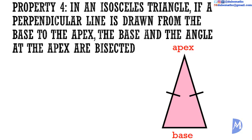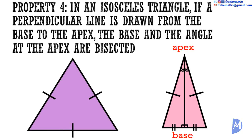Property 4: In an isosceles triangle, if a perpendicular line is drawn from the base to the apex, the base and the angle at the apex are bisected — that is, split into two equal parts. The two angles formed at the apex are equal, and the base now comprises two shorter lines of equal length. This can be extended to equilateral triangles, considering any one of the three equal angles as the apex.